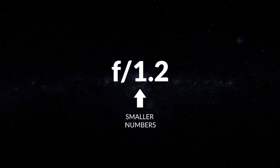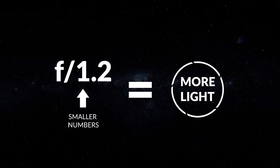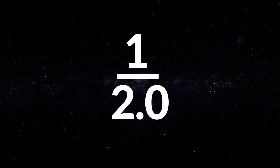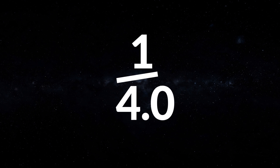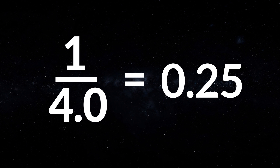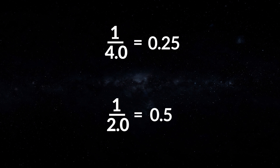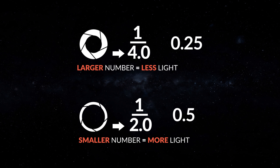Now if you're just getting started, this can be a little bit confusing, because smaller numbers equal more light. But the reason is, this is actually shorthand for a fraction. So if you see f2.0, that's actually 1 over 2.0, which equals 0.5. If you see f4.0, that's actually 1 over 4.0, which equals 0.25. So the larger your aperture number, the less light will be coming through the opening in your lens.